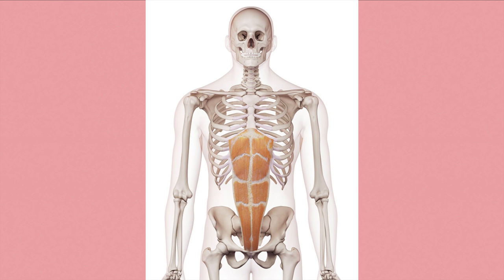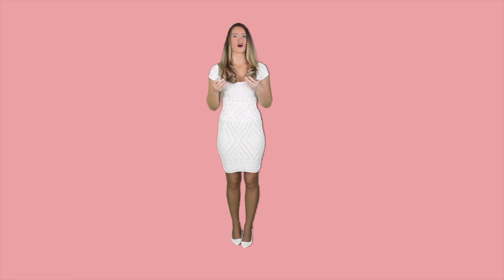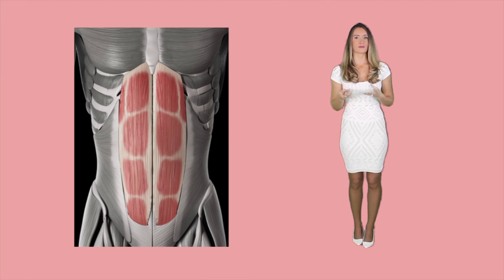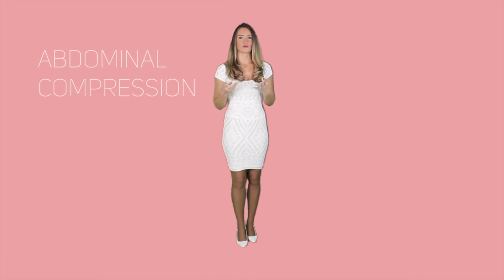The rectus abdominis is a strap-like muscle that is long and centrally located in the midline, linking the ribs and central sternum to the lower pubic bones. It appears segmented due to three fibrous bands that cross the muscle across the transverse plane, forming the famous six-pack. It assists all the other muscles in abdominal compression and also causes the vertebral column to flex.